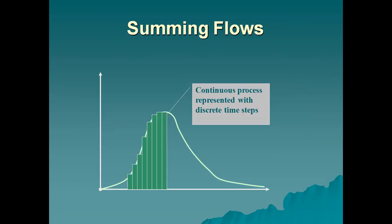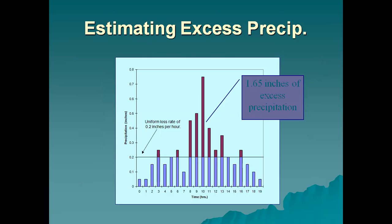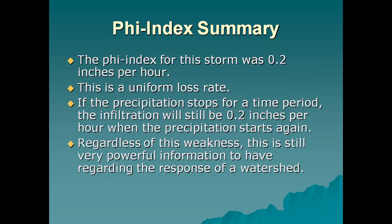Summing flows: the continuous process is represented with discrete time steps when estimating excess precipitation. Phi index summary: the phi index for this storm was 0.2 inches per hour. This is a uniform loss rate. If precipitation stops for a time period, the infiltration will still be 0.2 inches per hour when precipitation starts again. Regardless of this weakness, this is still very powerful information regarding the response of a watershed.